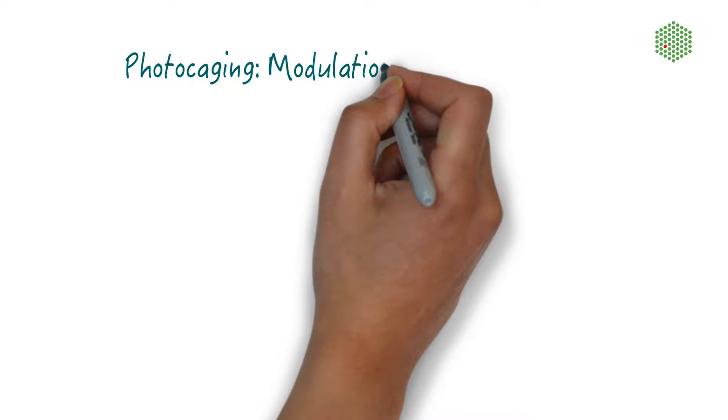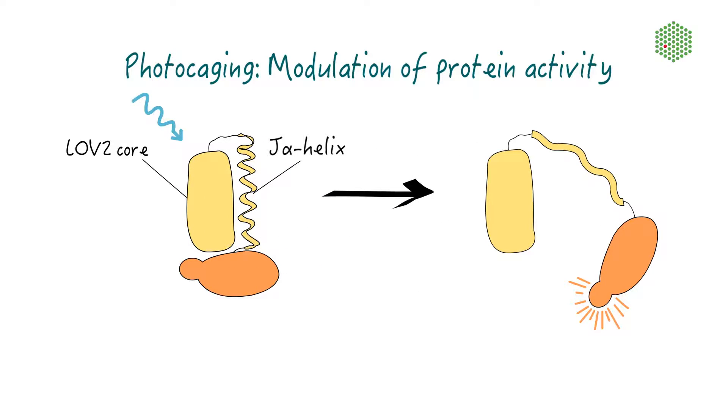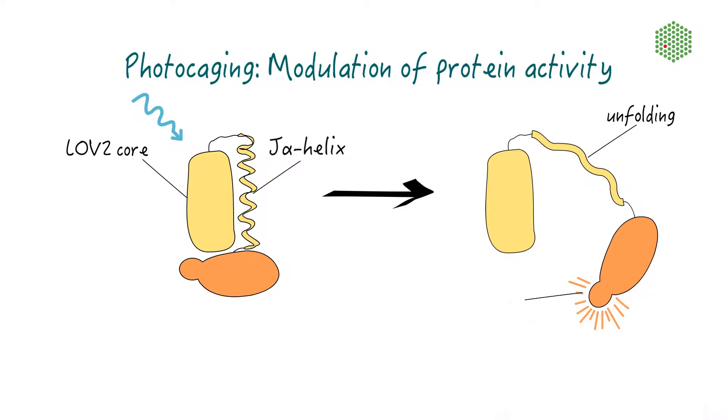Photocaging has been used to control enzymatic activity and protein-protein interaction. The target protein is functionally trapped in the dark, but once exposed to blue light, the conformational change in the LOV domain results in activation of the target protein.